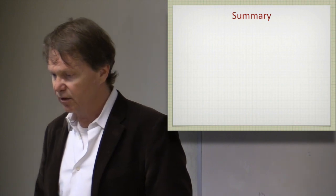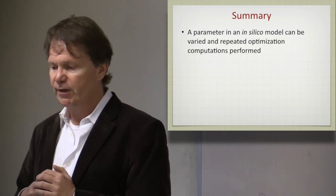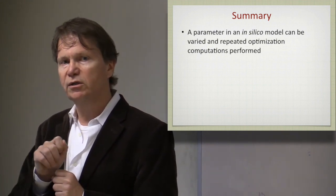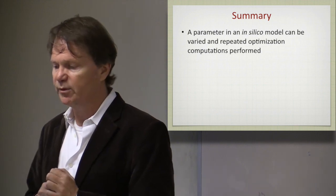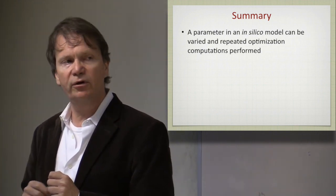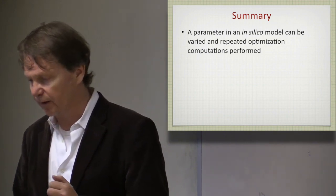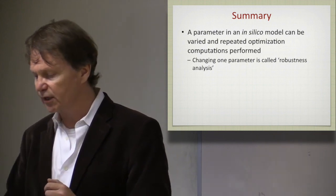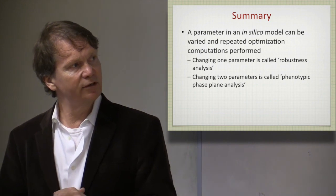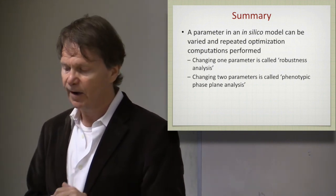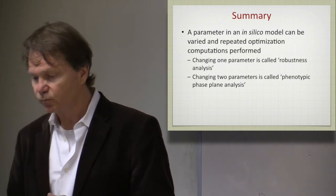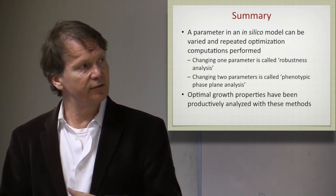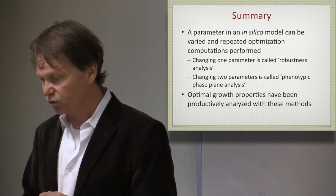In summary, we can take any parameter in a genome-scale model or small-scale model, vary it continuously, and repeat the optimization calculation for every fixed value of that parameter to trace out curves. When we change one such parameter, we call it robustness analysis. When we look at two simultaneously, it is called phenotypic phase plane analysis. Many optimal growth properties of cells under different conditions have been productively analyzed using these methods.